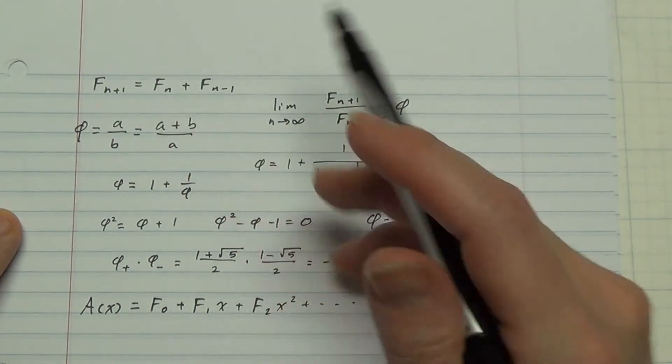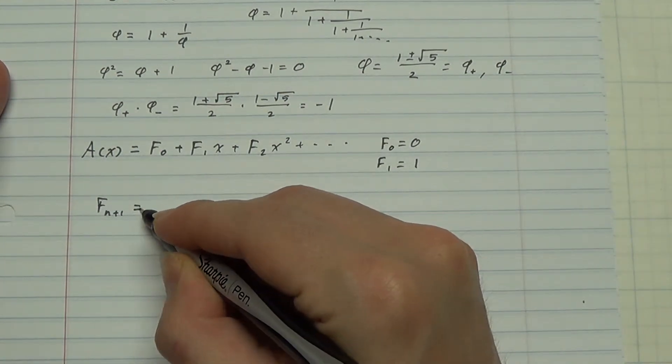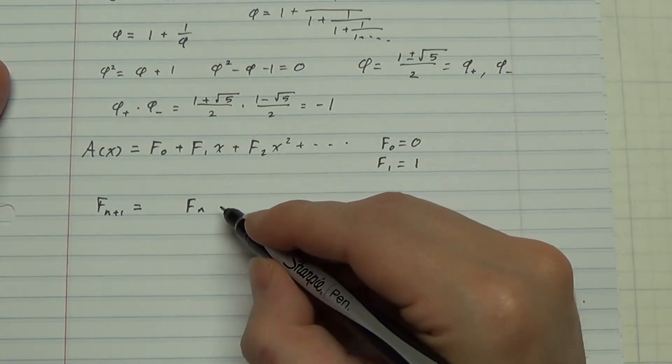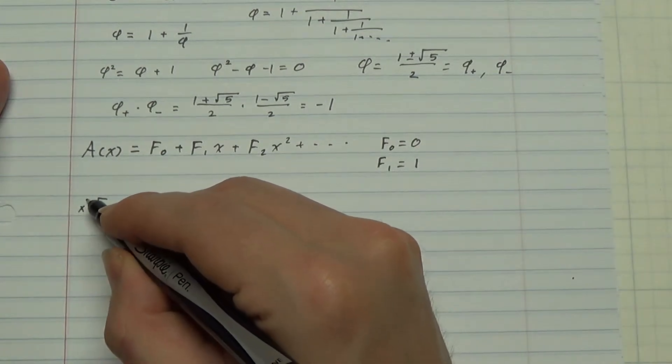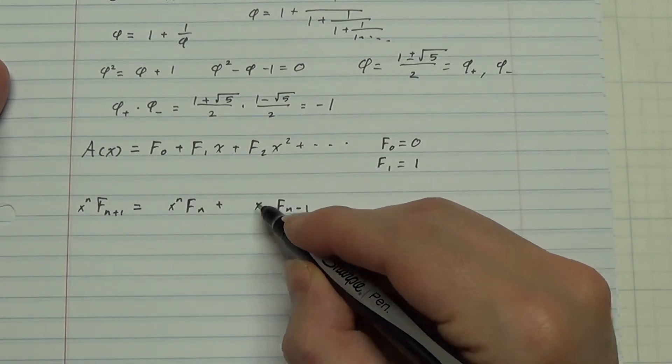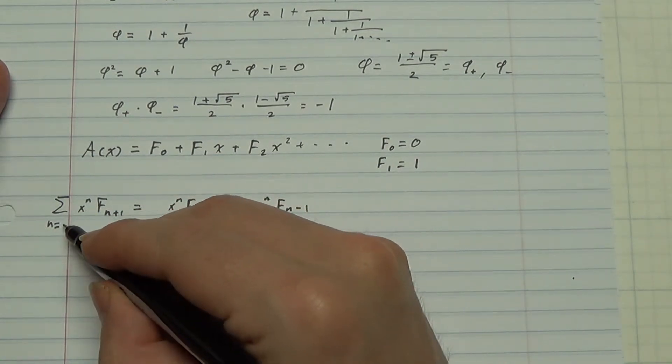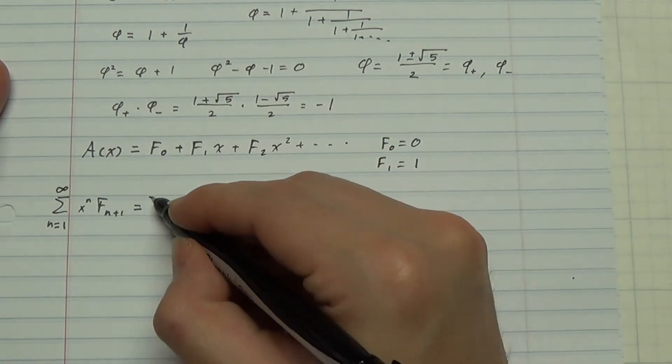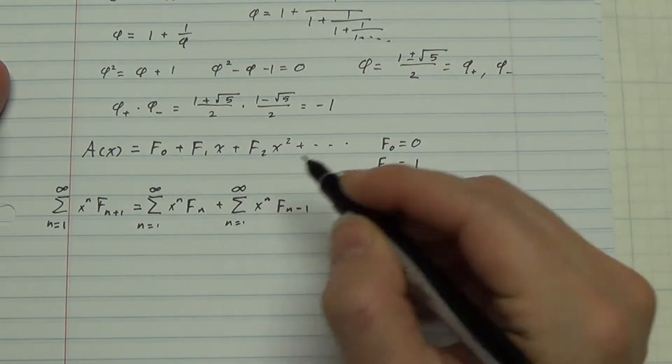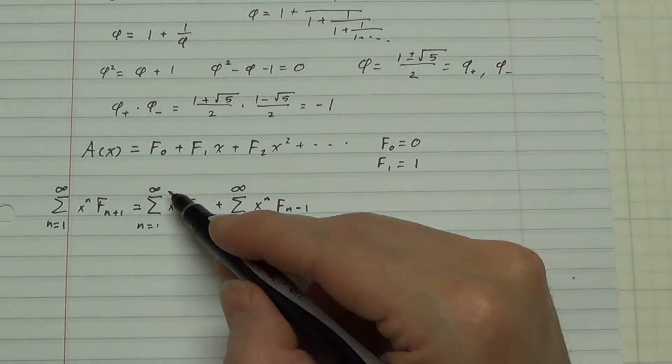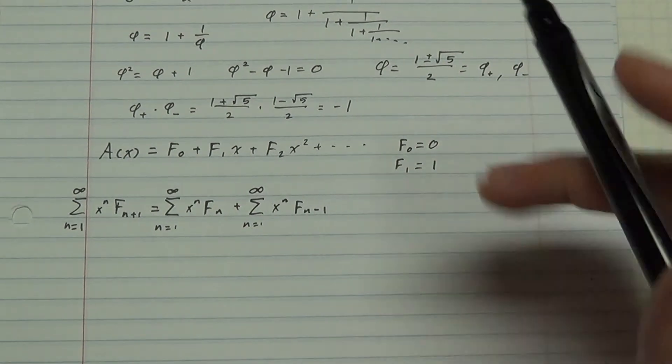Now let's reach up and get this recurrence relation. And what I'm going to do is multiply both sides by an arbitrary power of x, and then sum. There we go. You can see that this first term on the right hand side, since F0 is 0, the first term on the left hand side is the generating function.